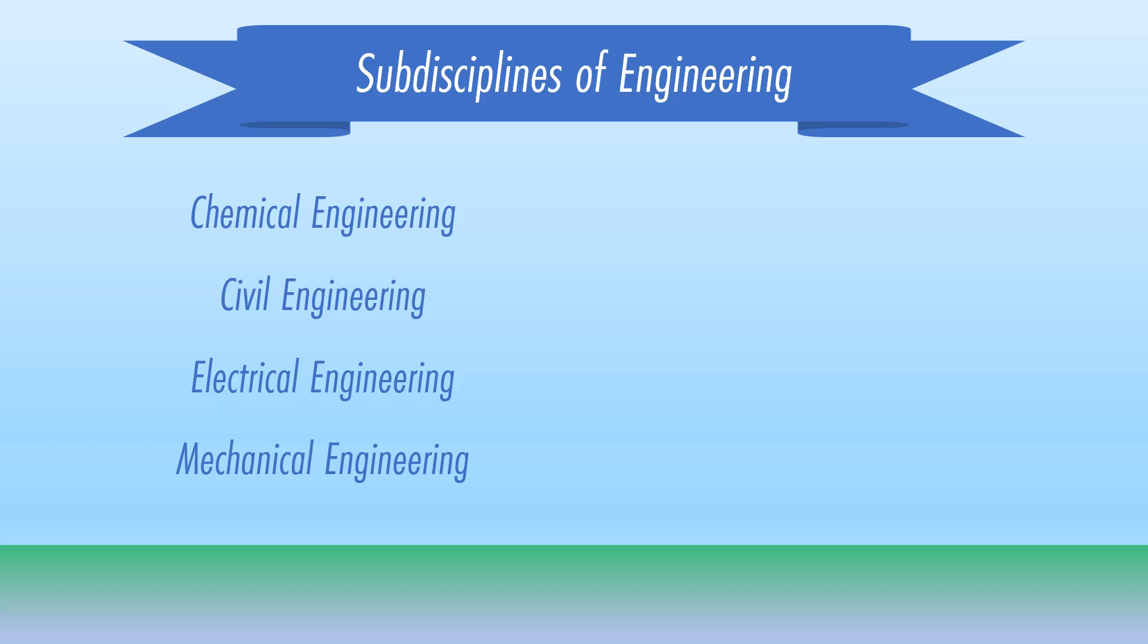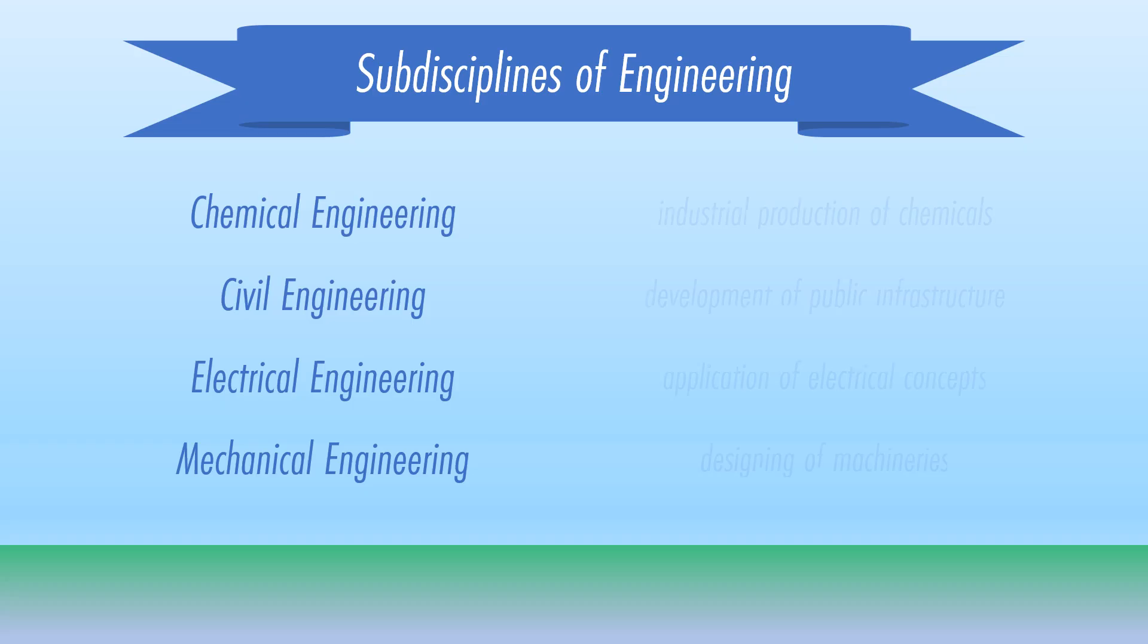Each of these engineering disciplines has its own influence in the industry. For example, mechanical engineering is focused on the design of machineries while civil engineering is concerned with the improvement of public infrastructures.